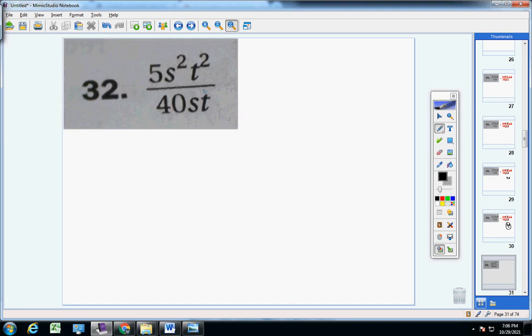Number 32. The prime factors of five, well five is prime, so just five. You have two S's and two T's. Prime factors of 40 would be two, two, two, and five. You have one S and one T. And here we go. There's no two's to cancel out with these two's down here, but my fives here can cancel. My S's can cancel. My T's can cancel. And I'm left with ST over two times two times two, eight.